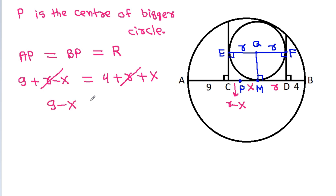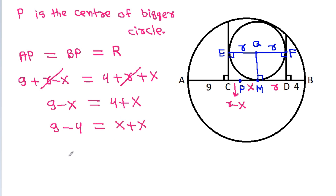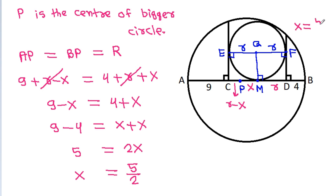Small r will get cancelled, so 9 minus X equals 4 plus small r plus X. And 9 minus 4 will be equal to X plus X. So 5 is equal to 2X, and X will be equal to 5 by 2.